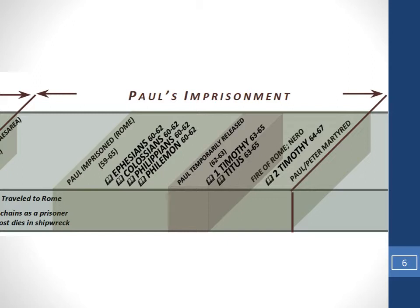He was first in house arrest in Rome, where conditions were relatively easy and he was able to receive people. There is likely a temporary release. The second time he's in prison, he is in much more grave conditions, likely under Nero and just prior to his martyrdom. The writings from this period show a different sense — a sense of coming to the end, a sense of hope, and a sense of instruction. Even the letter to the Ephesians occurred during imprisonment but after significant time in his previous missionary journeys.